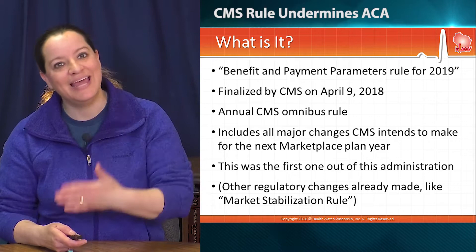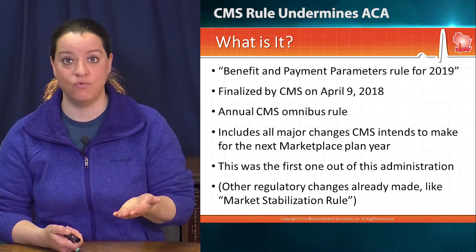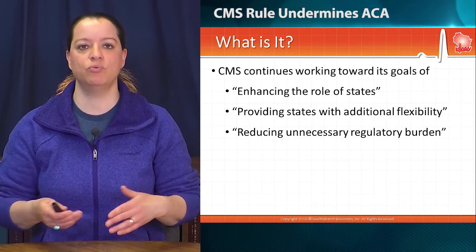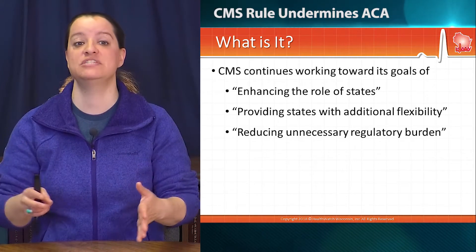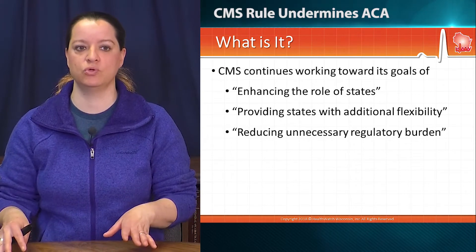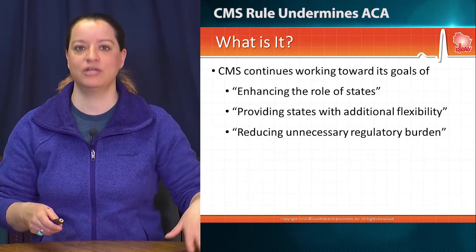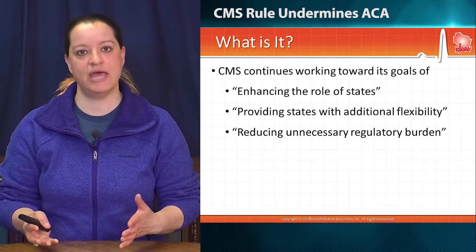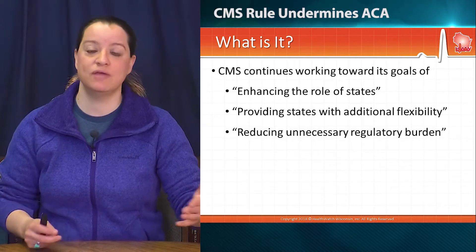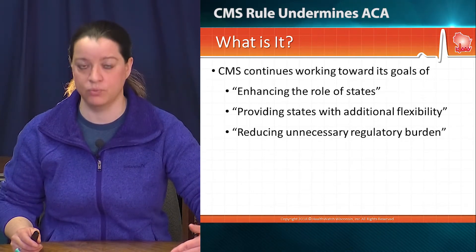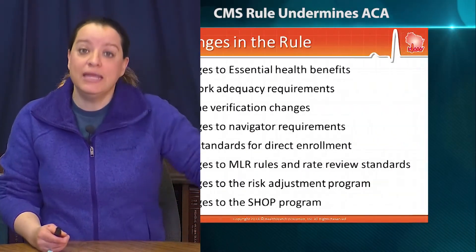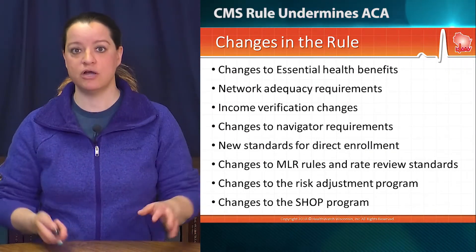This is the first one out of the administration, but the language they're using we've seen before. The Centers for Medicare and Medicaid Services, CMS, has been using their same talking points: the goals of enhancing the role of states, providing states with flexibility — you see the flexibility term sprinkled all throughout the rule language — and reducing unnecessary regulatory burden. They're trying to chip away at some of the edges of the Affordable Care Act as much as they can by rule, and there are some experts that question if they're overextending their reach of what they're allowed to do by rule, but they are trying to chip away at some of those edges in compliance with things they're hearing from some of the insurance industry.